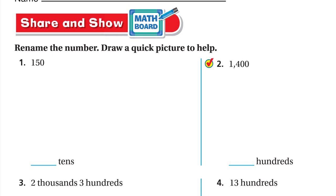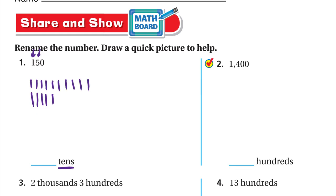For Share and Show, number 1: rename 150. We have one at hundreds — one flat — and five at tens — five longs. To rename it all in tens, replace the flat with 10 longs: 1, 2, 3, 4, 5, 6, 7, 8, 9, 10. Together with the original five longs, that's 15 longs or 15 tens.